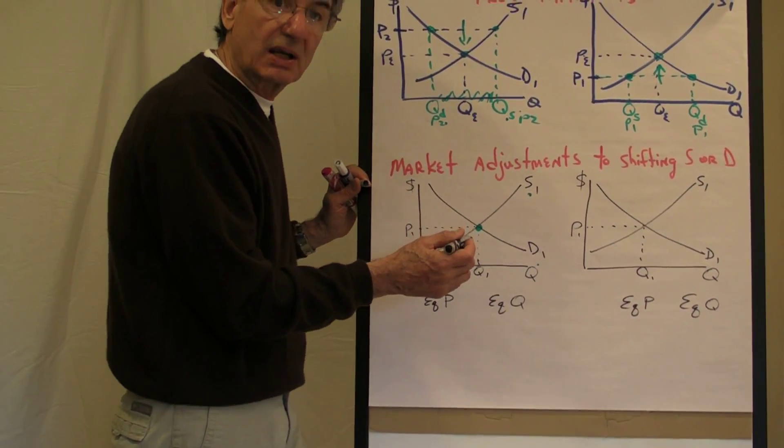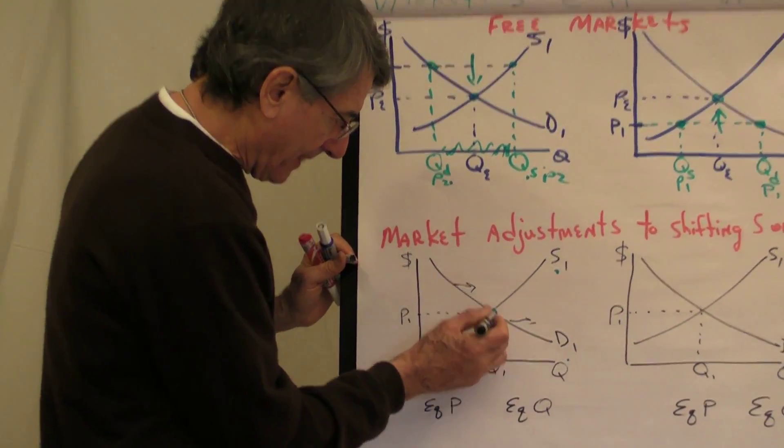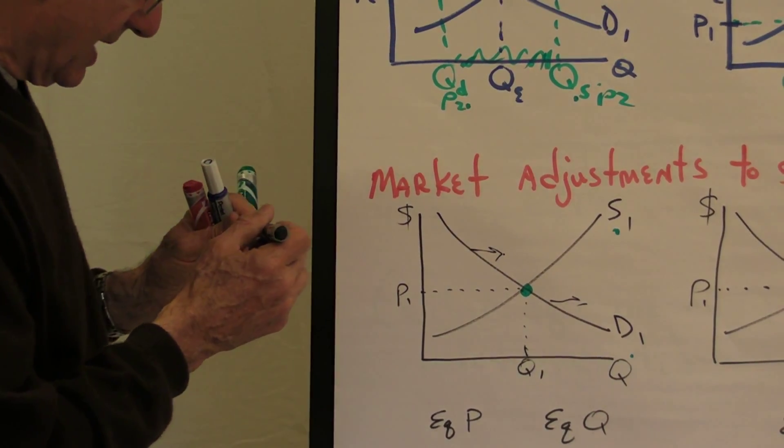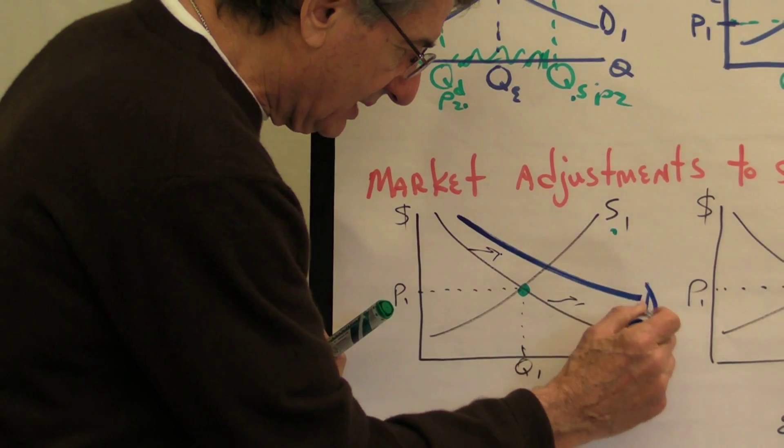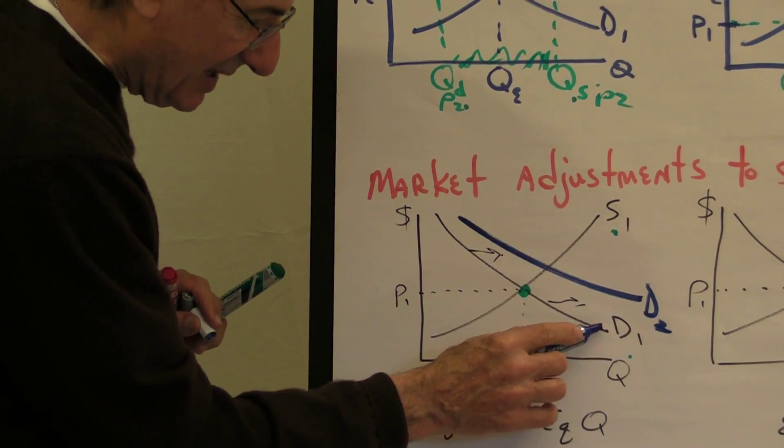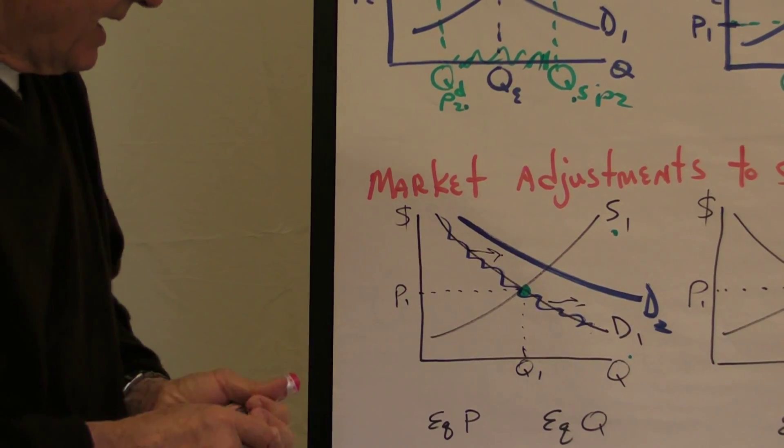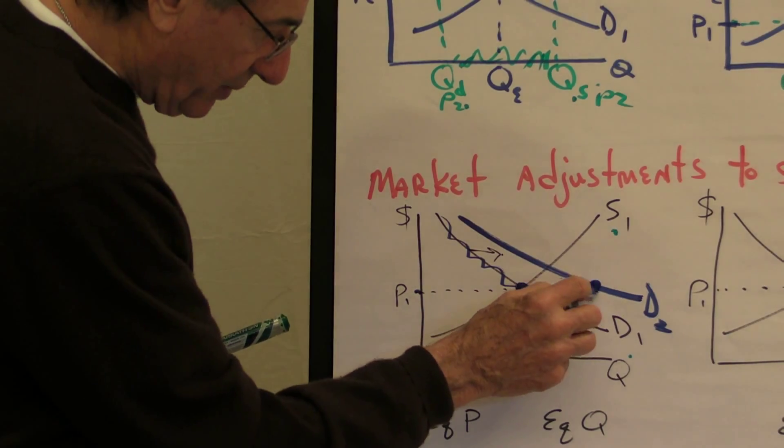So, let's have income change, and it's a normal good. Well, when income increases, at every price, the quantity that consumers want to buy is now larger. So, this would shift the demand curve to D2. Well, it turns out that this demand curve doesn't exist anymore. That's the one before the income change. And the price, P1, is no longer in equilibrium. At price P1, we now have quantity demanded larger than quantity supplied.